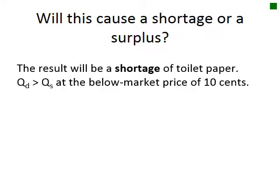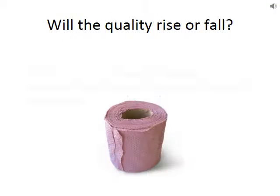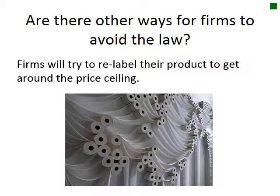Will this cause a shortage or surplus? The result will be a shortage of toilet paper because quantity demanded will exceed quantity supplied at below the market price of 10 cents. Producers can maintain their profits by reducing the size of each roll, and they can also lower quality by using cheaper ingredients and giving up fancier varieties. Producers might also try to re-label their product — perhaps as a decorative display or makeup remover — to get around the price ceiling.